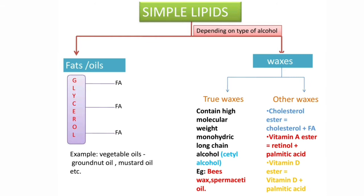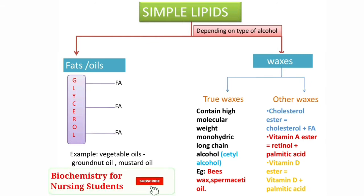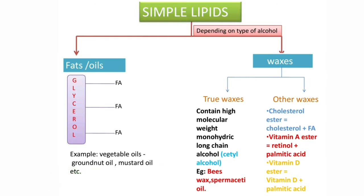Waxes are classified into true waxes and other waxes. True waxes contain high molecular weight, monohydric, long-chain alcohol. For example, cetyl alcohol. Beeswax contains these true waxes, and spermaceti oil is another example.